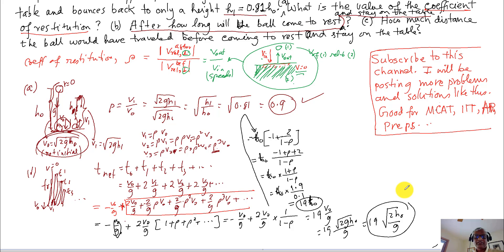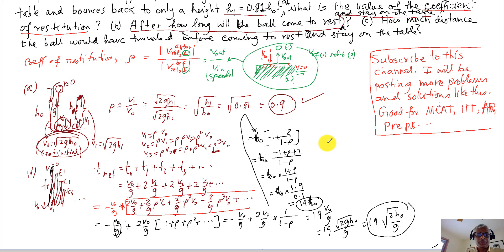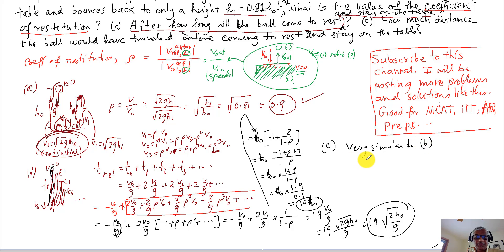The last part asks how much total distance the ball will travel — the sum of all the distances. Part C is very similar to part B.